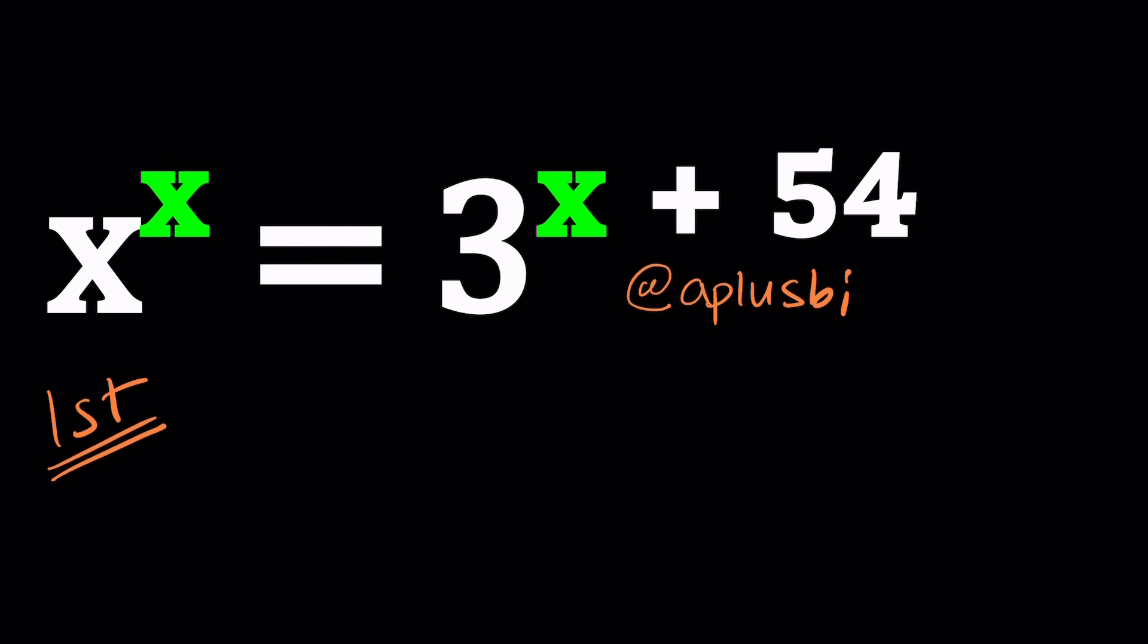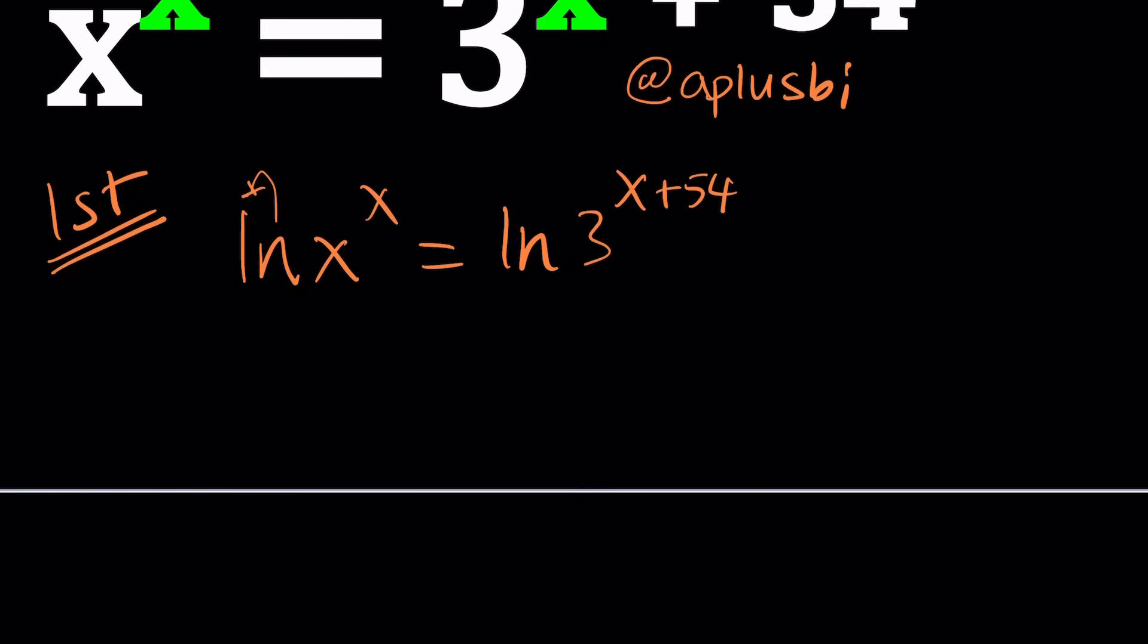And for this purpose, natural log works the best because it's more natural than other ones. So ln x to the power x equals ln 3 to the power x plus 54. ln representing natural logarithms. Some people call it Napier logarithms, but I would call it natural log. And it's just backwards because I think it comes from French or something like that. Anyways, properties of logs say that you can bring these exponents to the front. So that becomes x ln x equals x plus 54 multiplied by ln 3.